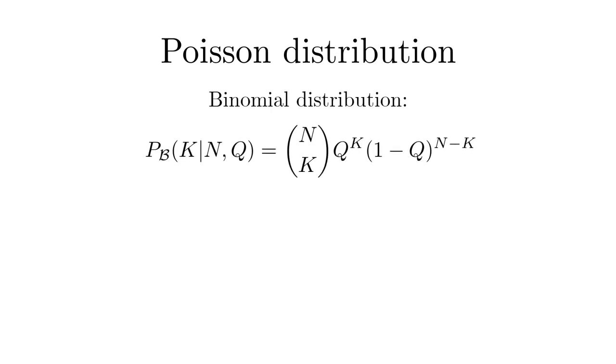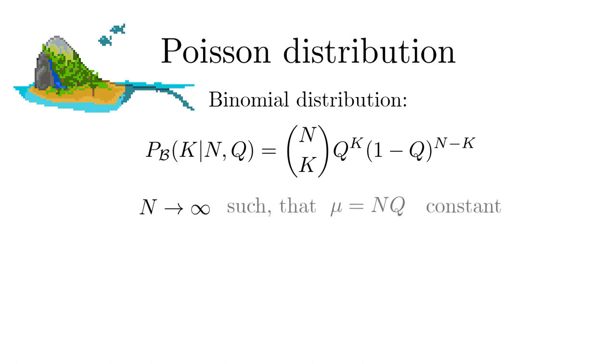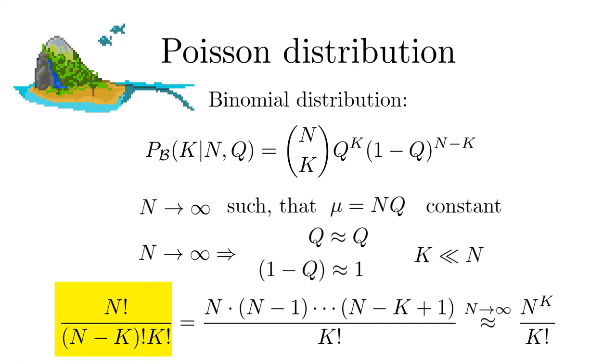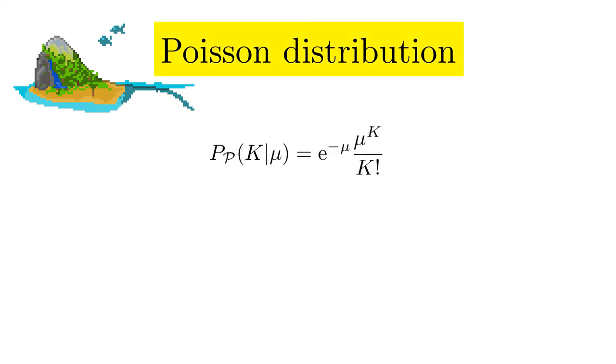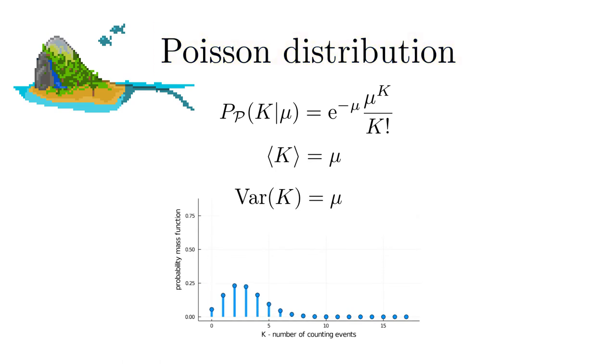Now we want to consider a special limit of the binomial distribution that will bring us to the Poisson distribution that we already saw in the last lesson. Consider the binomial distribution in the limit N to infinity such that the mean stays constant. Since N becomes large Q goes to 0 and 1 minus Q tends to 1. The whole expression will have non-vanishing contributions only for rather small values of K. So we can approximate 1 minus Q by 1. Since K is rather small compared to N we can approximate the binomial coefficient. So taking this limit and forcing the mean to remain constant yields the following expression. Along with the proper normalization we obtain the Poisson distribution.